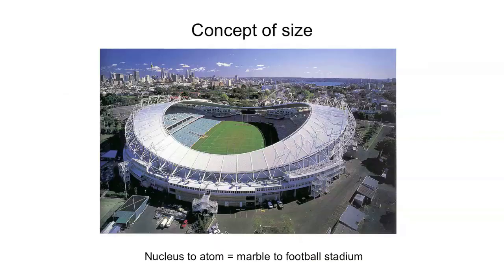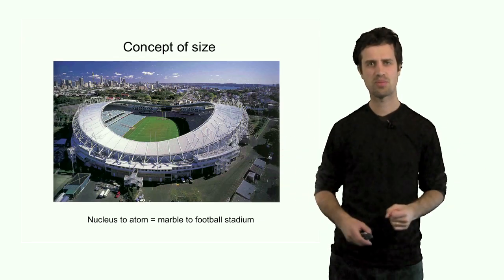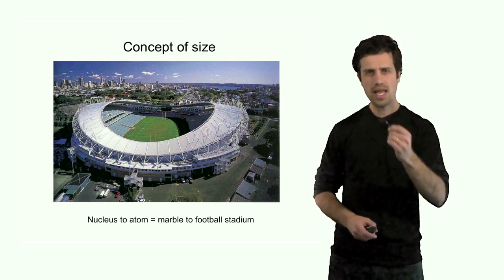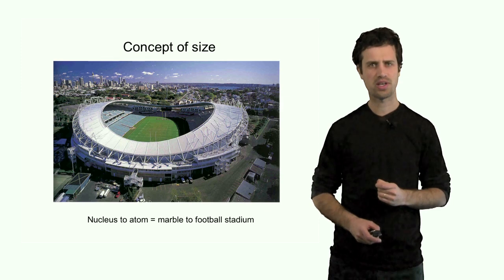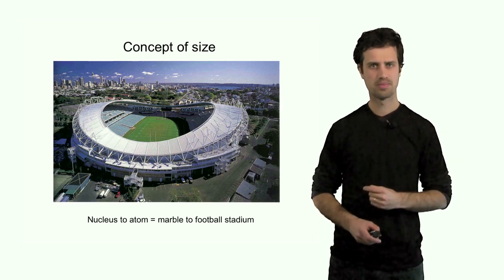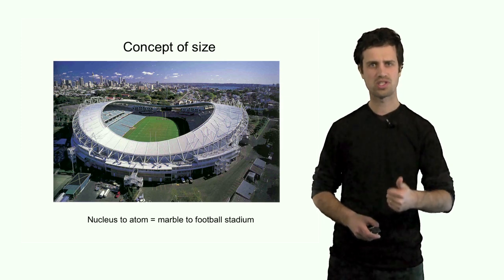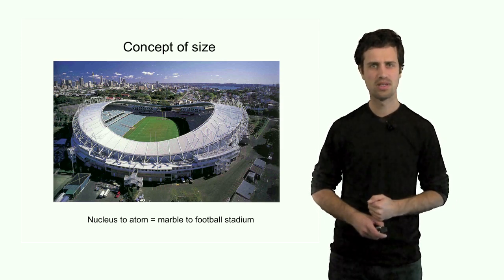To illustrate that size difference, let's consider putting a marble in the middle of a football stadium. The size of the marble represents the size of the nucleus, and the size of the stadium represents the size of the atom as a whole. The electrons, even smaller particles, are floating within the stadium. So this example shows two things. First, the size of the nucleus is a lot smaller than the atom as a whole. And second, the atom is mostly empty space.